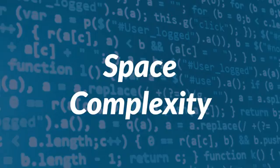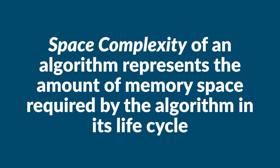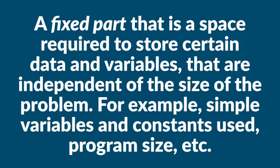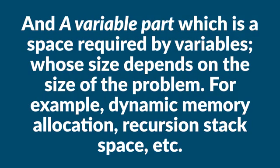We also have space complexity. Space complexity of an algorithm represents the amount of memory space required by the algorithm in its life cycle. The space required is equal to the sum of two components: a fixed part, which is space required to store certain data and variables independent of the size of the problem (for example, simple variables and constants used, problem size, etc.), and a variable part, which is space required by variables whose size depends on the size of the problem (for example, dynamic memory allocation, recursion stack space, etc.).